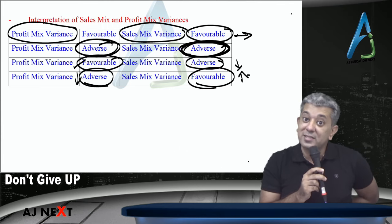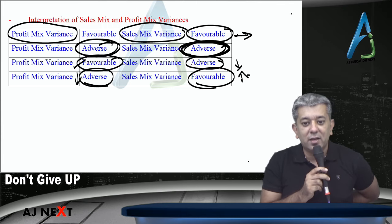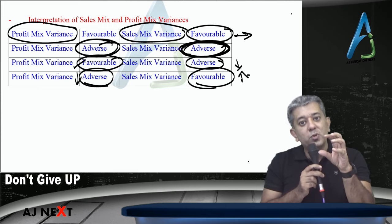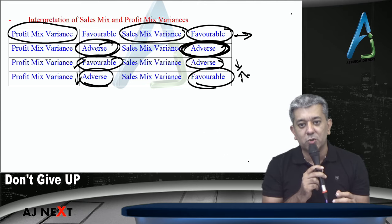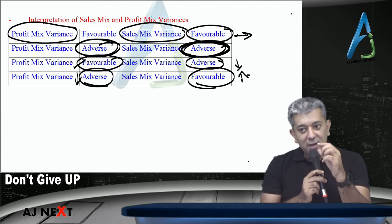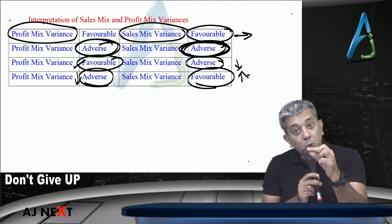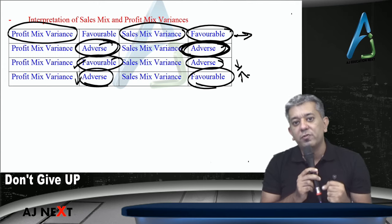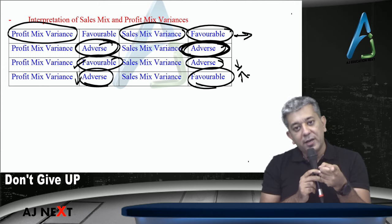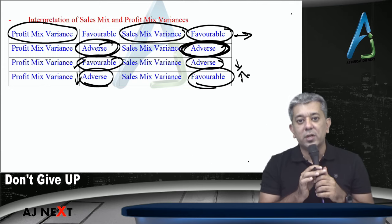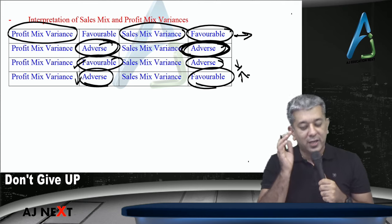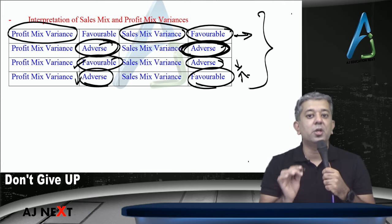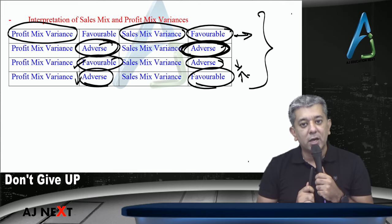Fourth case — profit mix variance adverse but sales mix variance favorable: the company changed the ratio in favor of products which have higher selling price but lower profit. So company's sales went up but profit went down. This is useful for analytics — for example, if a company's sales are continuously increasing but profit is decreasing every year, it means the company is concentrating on selling products with higher selling price but lower profit. This helps in changing strategies — let's try to promote those products more which have higher profit to earn more overall.